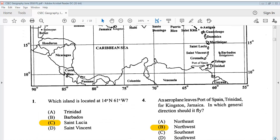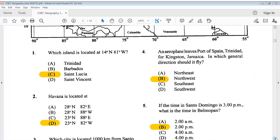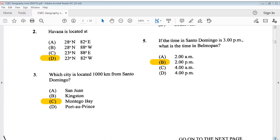Question 1 says which island is located at 14 degrees north, 61 degrees west. The answer is C, Saint Lucia. And you can always go back on the video and go back to the map. Question 2: Havana is located at? The answer is D, 23 degrees north, 82 degrees west. Number 3: Which city is located 1,000 km from Santo Domingo? The answer is C, Montego Bay.